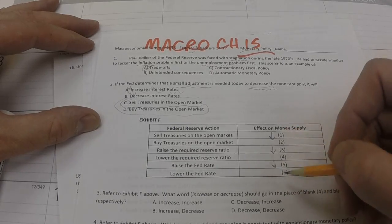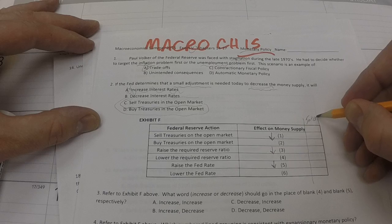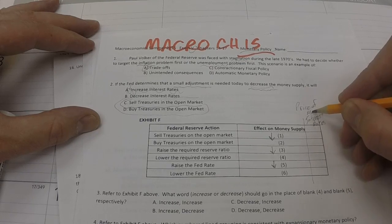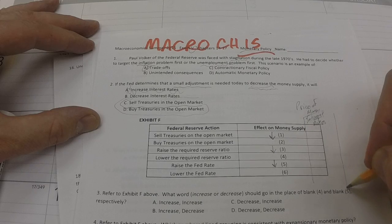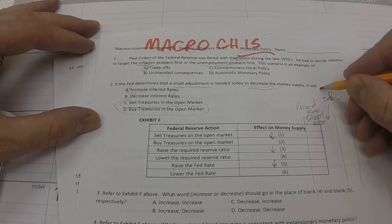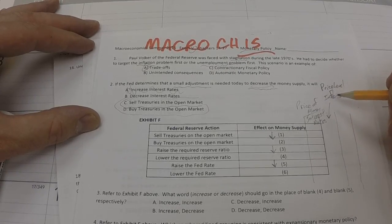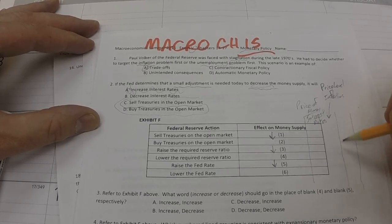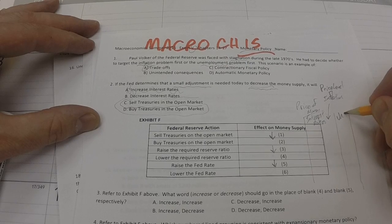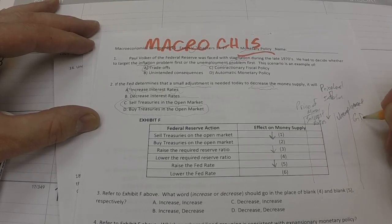So we can fill out this chart right here. Selling treasuries on the open market decreases the money supply. So does raising the required reserve ratio or raising the Fed rate. All of those things have a decreasing effect on the money supply. While we're at it, why don't we complete this chart here by adding to this interest rates. And remember, folks, interest rates are the price of money. The price of money is what you have to pay to get it, and interest rates are what you have to do for that. But we're going to add a couple other columns, too. For instance, in this column, we're going to put inflation, also known as the price level.